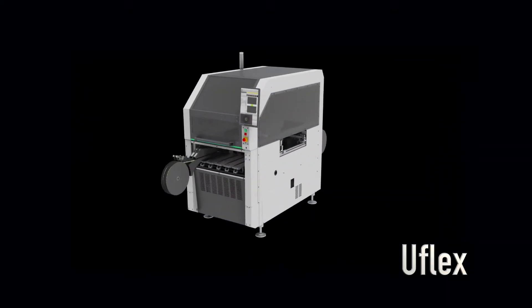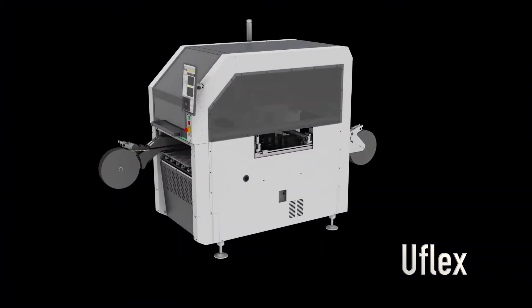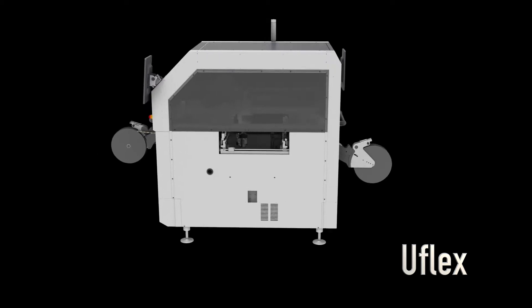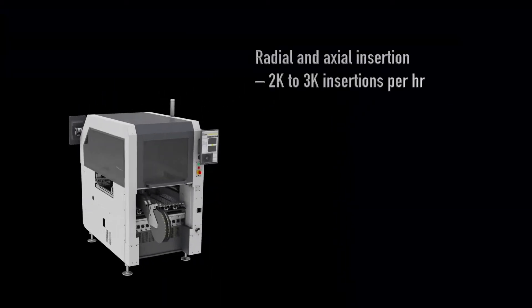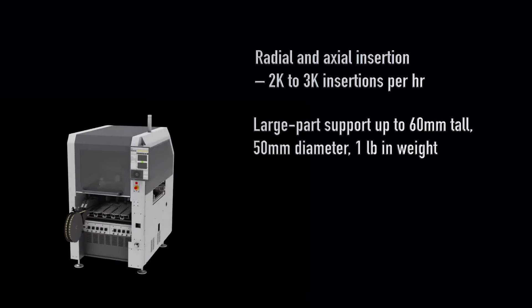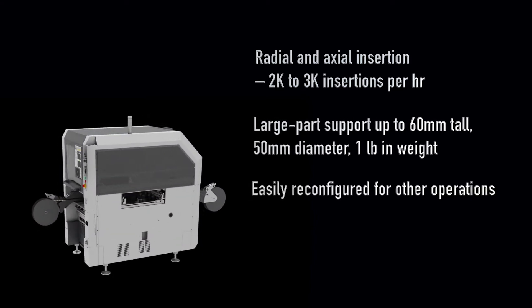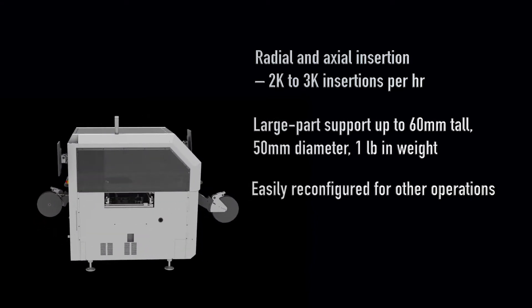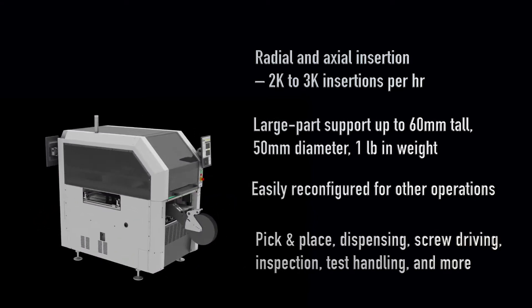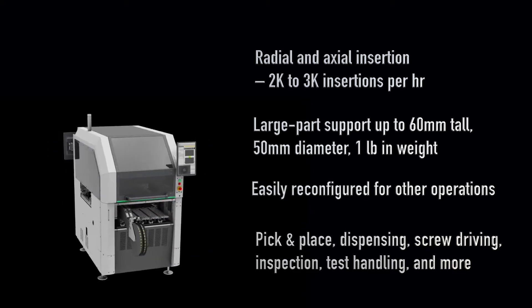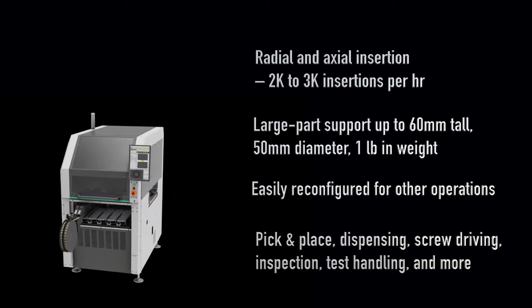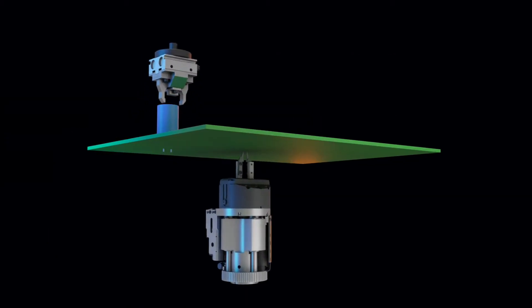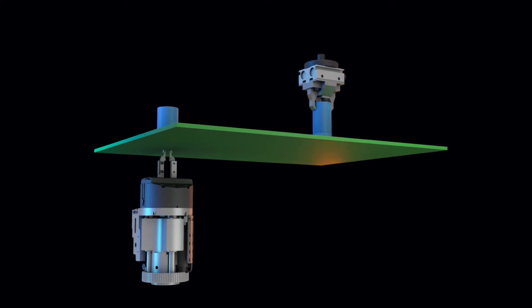Universal's U-Flex automation platform is the ultimate flexible assembly cell for all forms of odd-form insertion and mechanical assembly operations, enabling automated assembly without dedicated hard-tooled systems. U-Flex supports up to four high-speed vacuum spindles, or three high-speed pneumatic grippers, while accommodating a comprehensive array of standard and third-party tooling to perform a variety of other automation tasks.